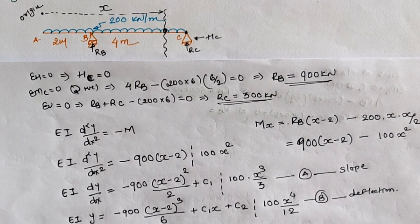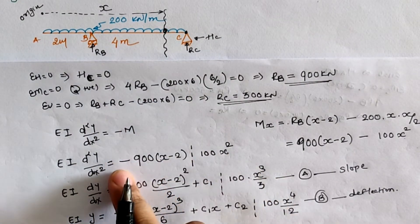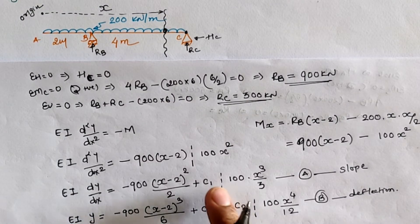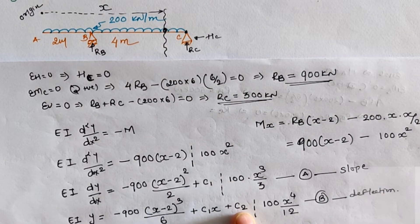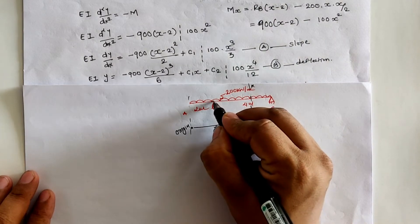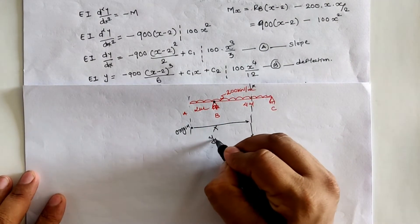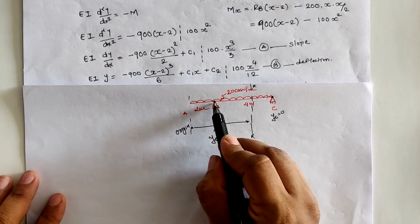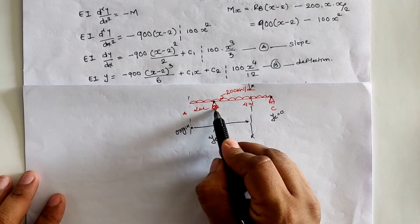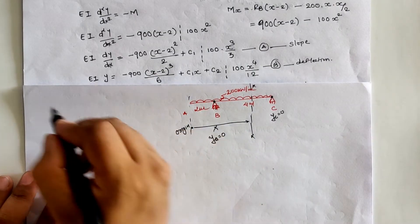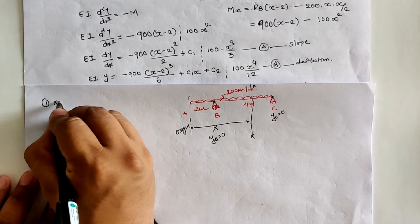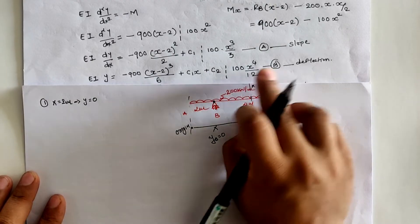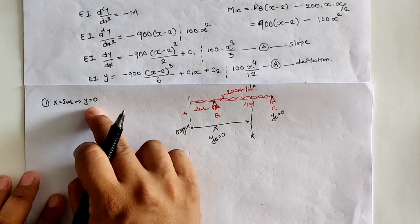The next step is to find integration constants C₁ and C₂ using boundary conditions. At a roller support deflection is zero, and at a hinge support deflection is also zero. Support B is at 2 m from the origin, so the first boundary condition is: at x = 2 m, y = 0.